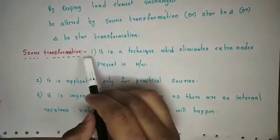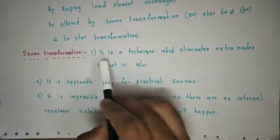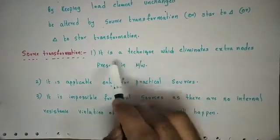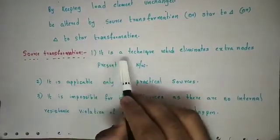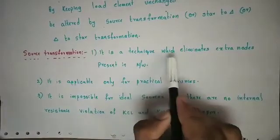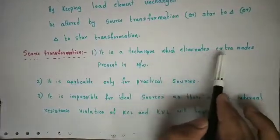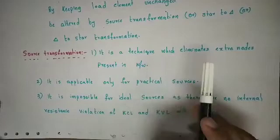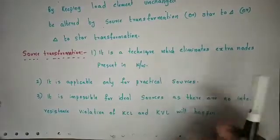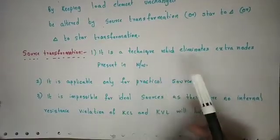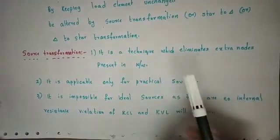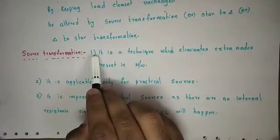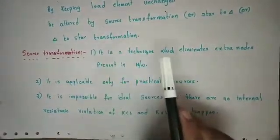The next step is source transformation. Source transformation is a technique which eliminates extra nodes present in the network. If you reduce the number of nodes, simplification becomes faster.